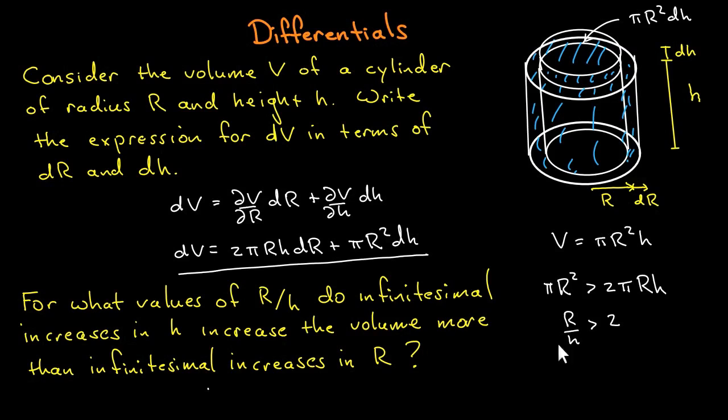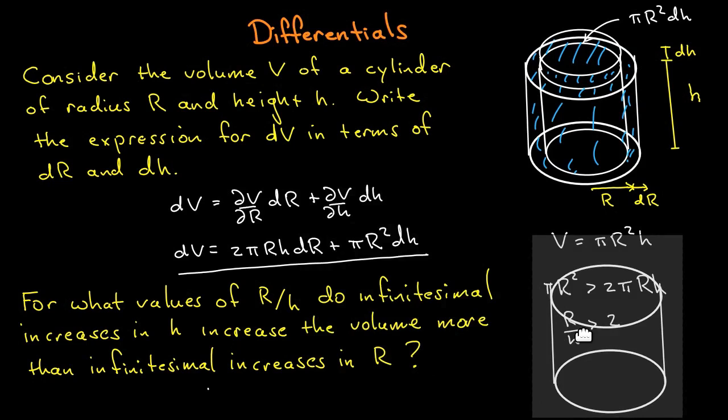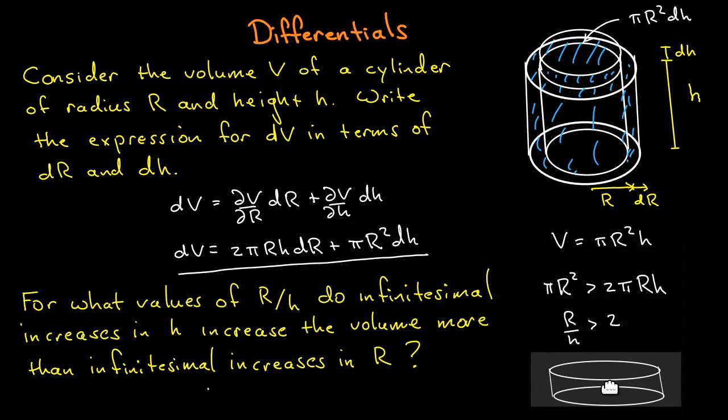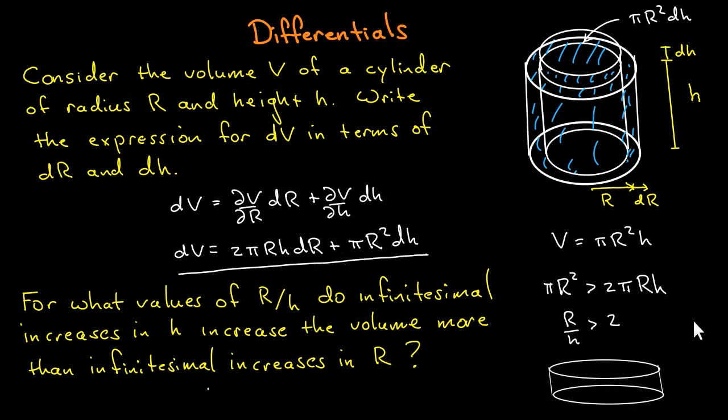If you think about it, that means a very flat cylinder. I can illustrate that here. A cylinder with a radius larger than twice the height would be a cylinder such as this one. Only when the cylinder has a radius more than twice the height do small increments in height produce more volume change than small increments in the radius. That's the kind of thing you can address easily with differentials.